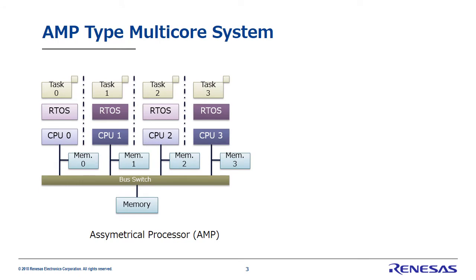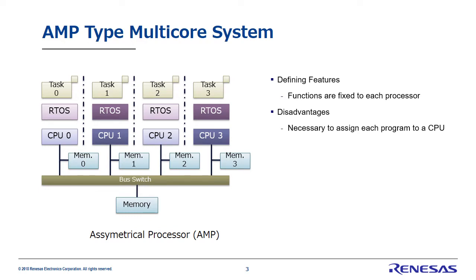Next, I'd like to discuss AMP. The primary feature of AMP is that each CPU is assigned specific functions. To put that another way, the software that will run on each CPU is already determined. And as shown in the figure, the RTOS also differs per CPU, and indeed, not using an RTOS is not a problem. Now, in terms of disadvantages, when developing a program, it's absolutely necessary to determine the CPU. As a result, you have to be aware of the executing CPU when planning a program.